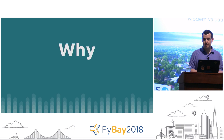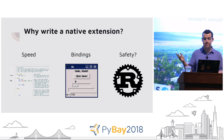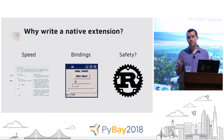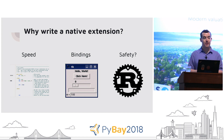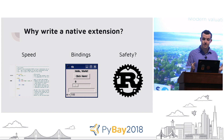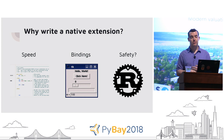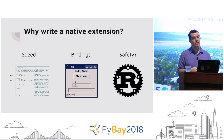So why would one write a native extension module? I've given three examples here, probably the most common ones. The first is speed. Python is decently fast for most use cases, but in some cases you might want to write an extension to get optimal speed. Things like C, Rust, and C# can sometimes be faster.